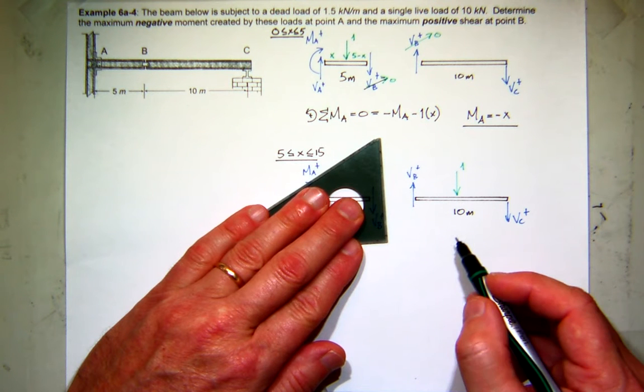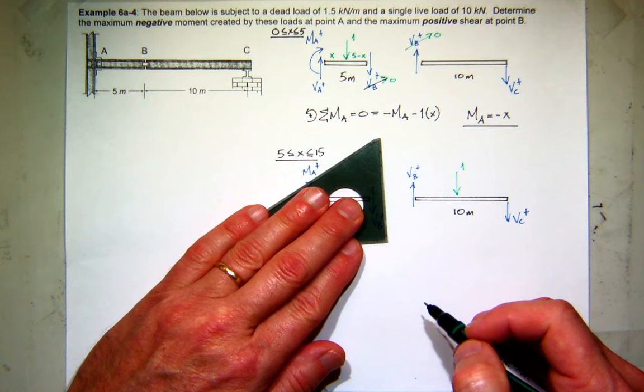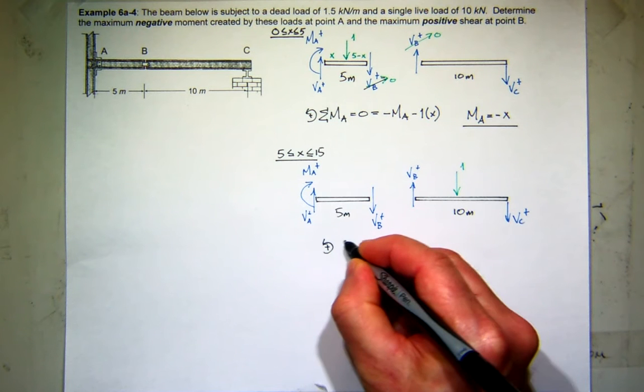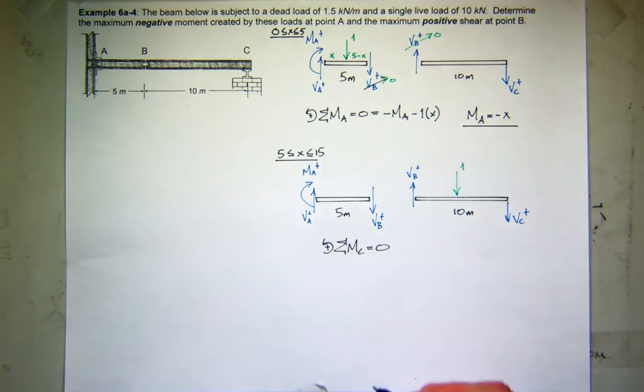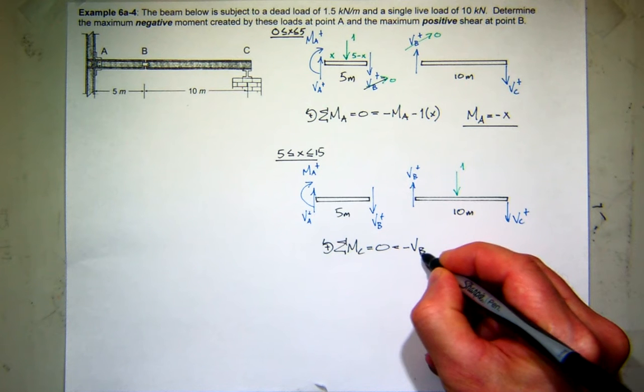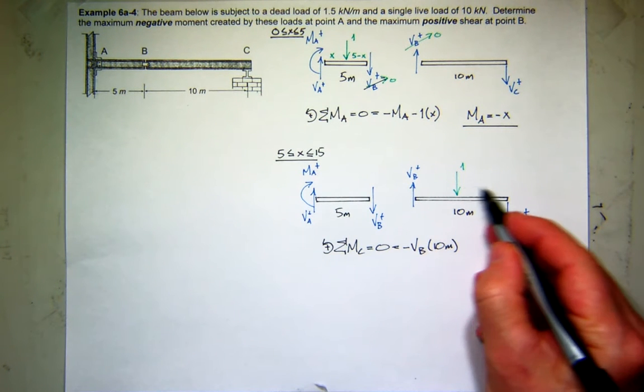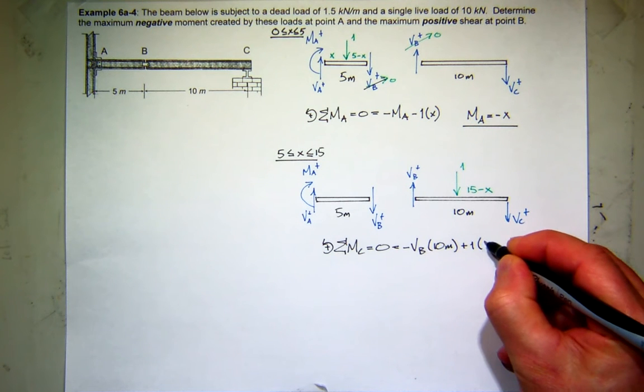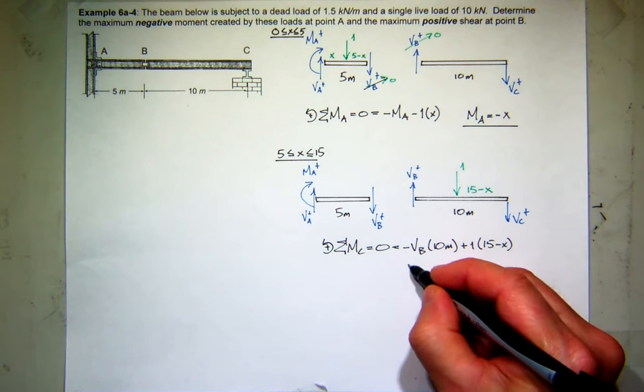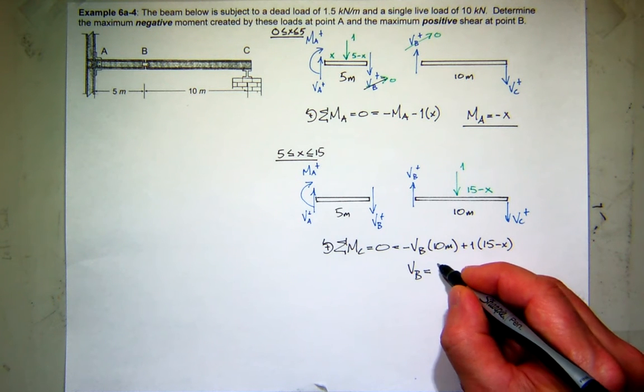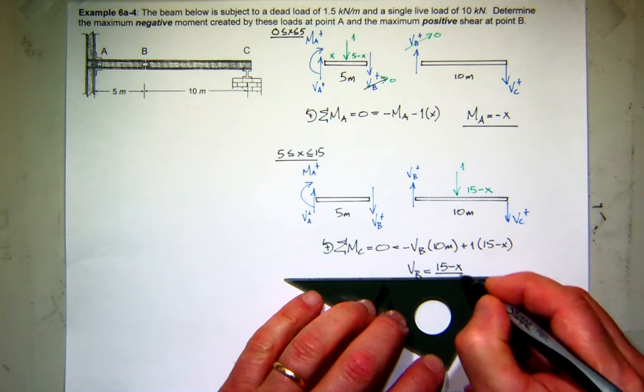How do I find the shear at B? Sum the moments about C. If I sum the moments about C, right hand rule is my sign convention, I have negative the shear at B times 10 meters. What's this distance? I need that distance. 15 minus X. That creates positive moment of 1 times 15 minus X. So I can find the shear at B. It's 15 minus X divided by 10.